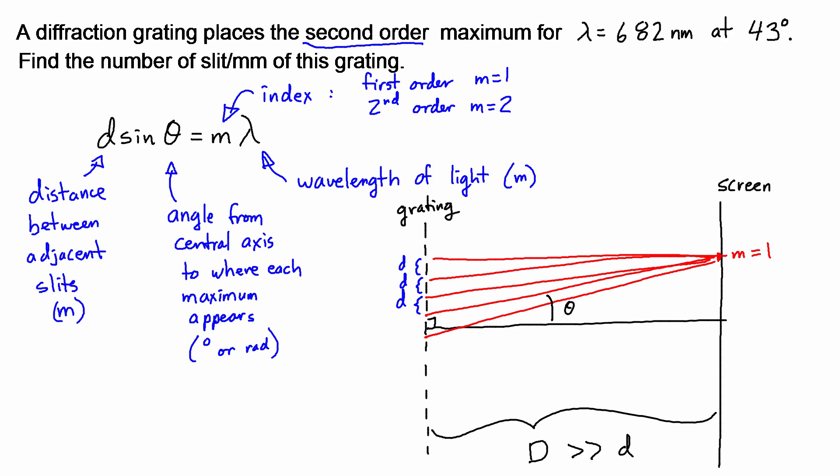The idea is that when big D, the screen, is so far away that big D is much, much, much bigger than little d, then the rays all become parallel and there is only one angle θ. The reason we draw it this way, and you can see that there's an angular difference between the red rays, is just because we can't fit the proper scale onto a piece of paper or a chalkboard or the screen.